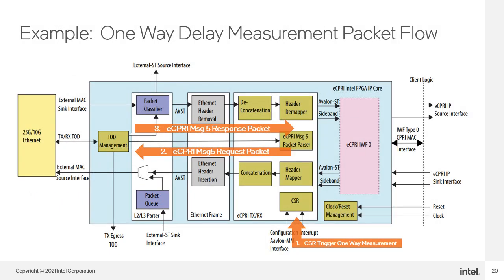Here we have an example of using the CSR interface to perform the eCPRI one-way delay measurement on the transport link. This flow requires the Ethernet IP PTP hardware to work, so if the Ethernet MAC is selected without PTP or when using another vendor's Ethernet MAC without PTP, this feature would be disabled. This measurement can be performed with or without a follow-up message. One: you write to the eCPRI message 5 control register. Two: the IP issues a message 5 request packet to the MAC for transmission, adding a timestamp value taken from the time of day management block. Three: the message 5 response packet with timestamp and compensation value from the PTP is received, and from this the transport delay is determined.